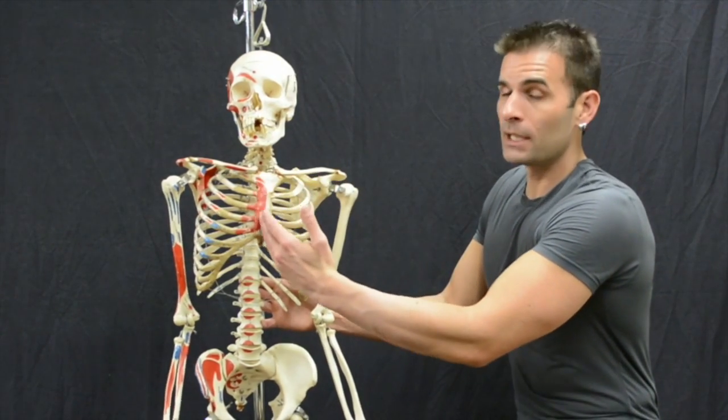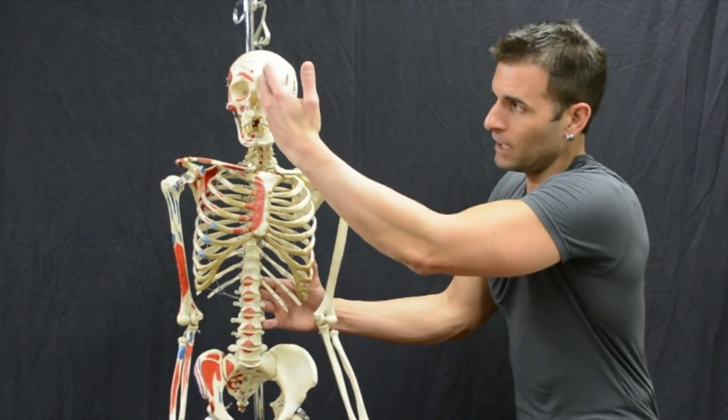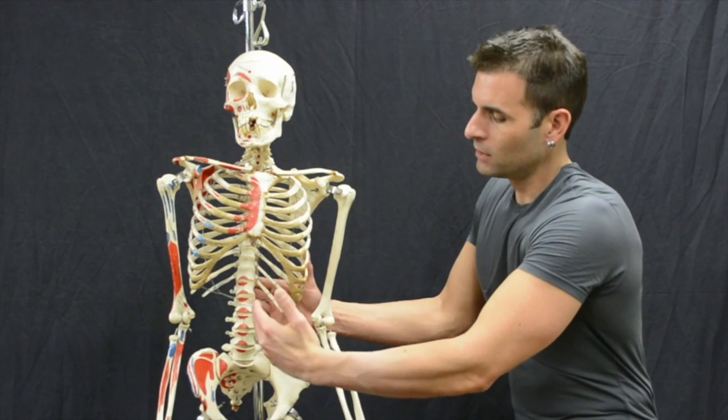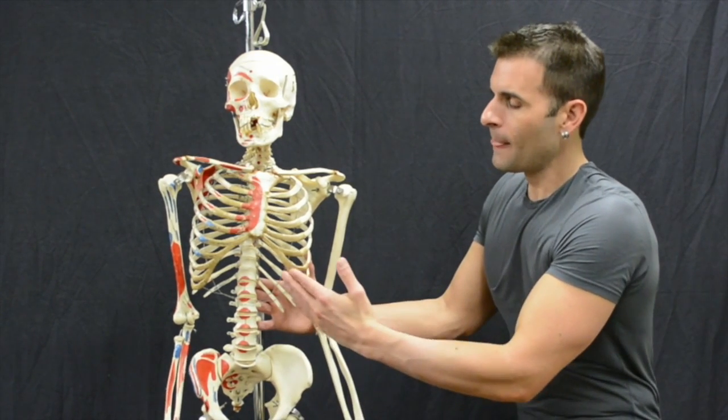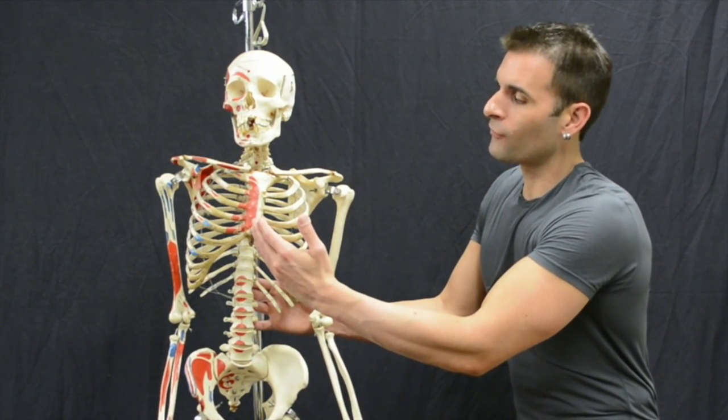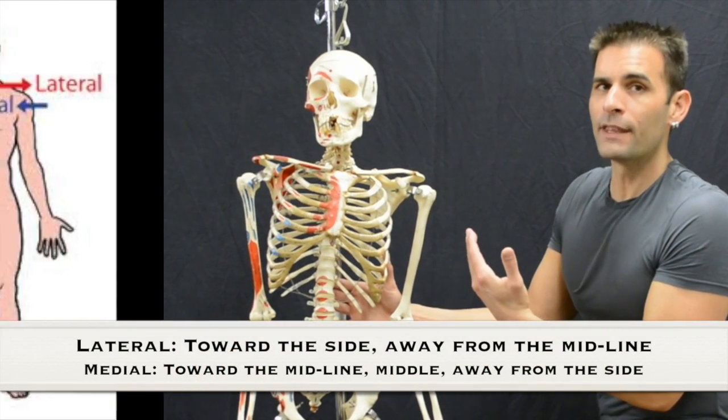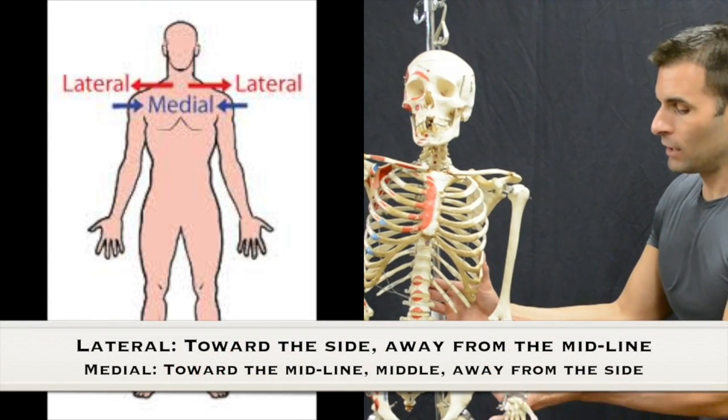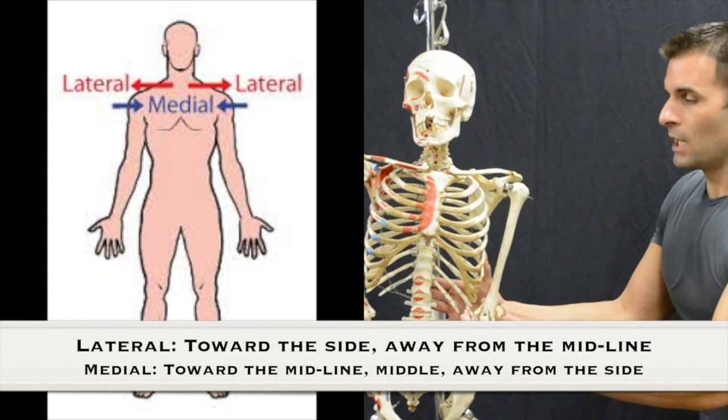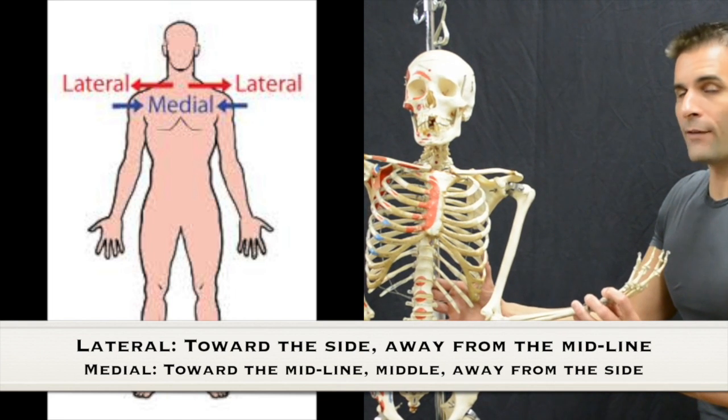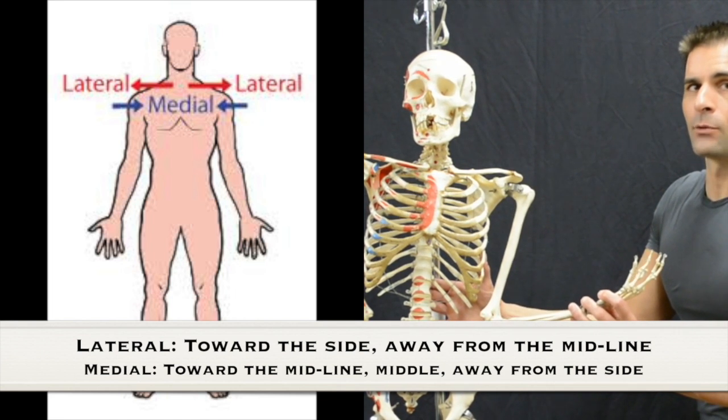When you are discussing the midline of the body, imagine an imaginary line running right down the middle of the body. If I move things from that midline away, I am moving them laterally. I will give you an example. If I have my hand up and I rotate my hand outward away from the midline, it is a lateral rotation.